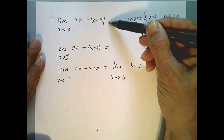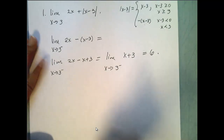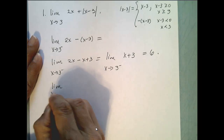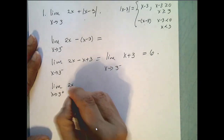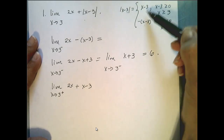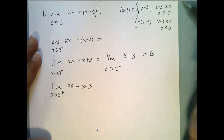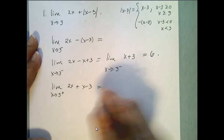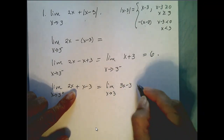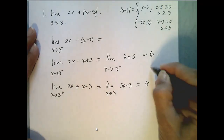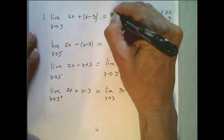In order for this limit to exist, the left and right-hand limits have to exist and be equal. So now let's look at the limit as x approaches 3 from the right. The function is defined from the right of 3 as 2x plus x minus 3, for values bigger than or equal to 3. This equals the limit as x goes to 3 of 3x minus 3, and plugging in 3 gives 6 as well. Since these are equal, the limit as x approaches 3 of the original function is 6.